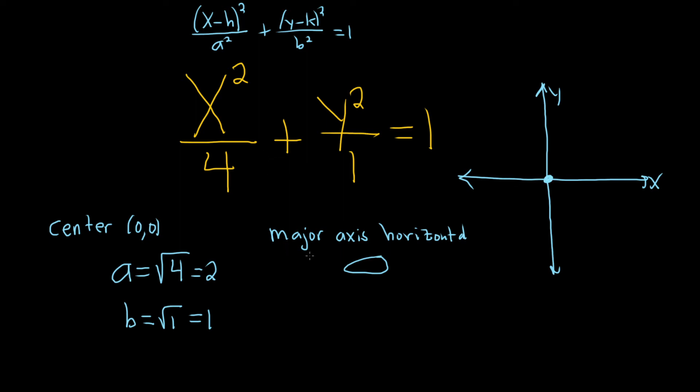And this is an ellipse that has a major axis that's horizontal. So we go left and right by a from the center. So we'll go left 2, put a dot, go right 2, put a dot. So this is the major axis here, this horizontal axis. And then we go up and down by 1. So up 1, down 1. So this would be the graph of our ellipse.